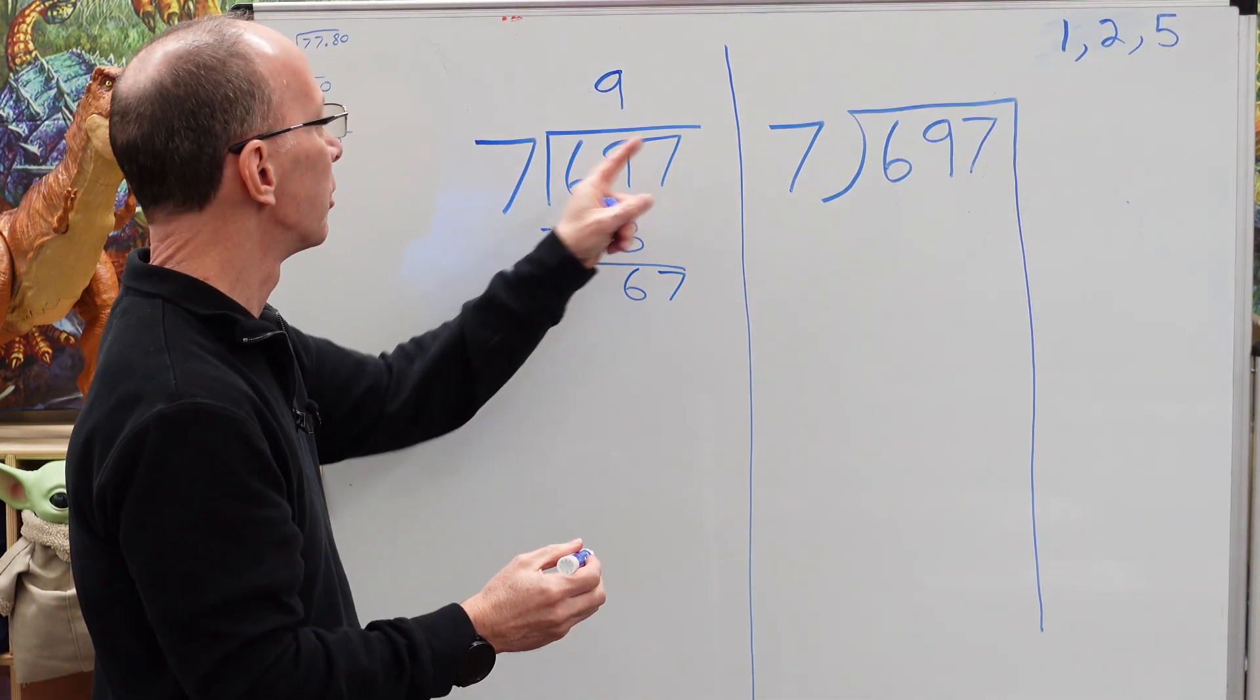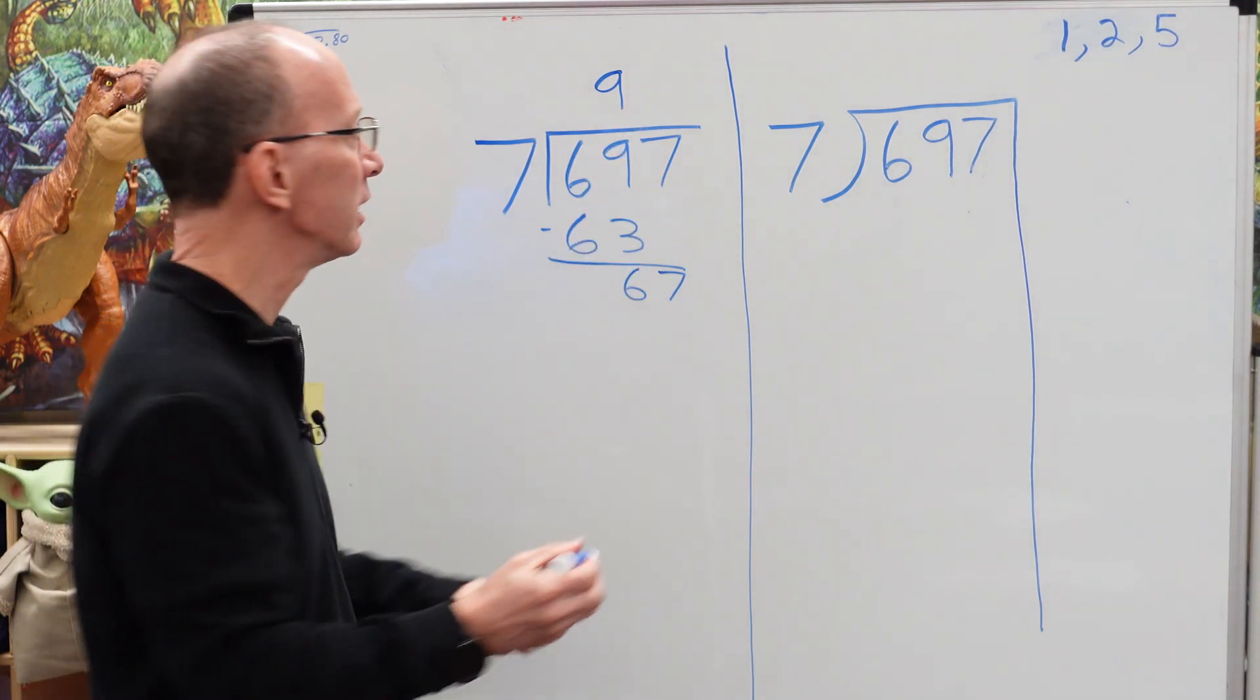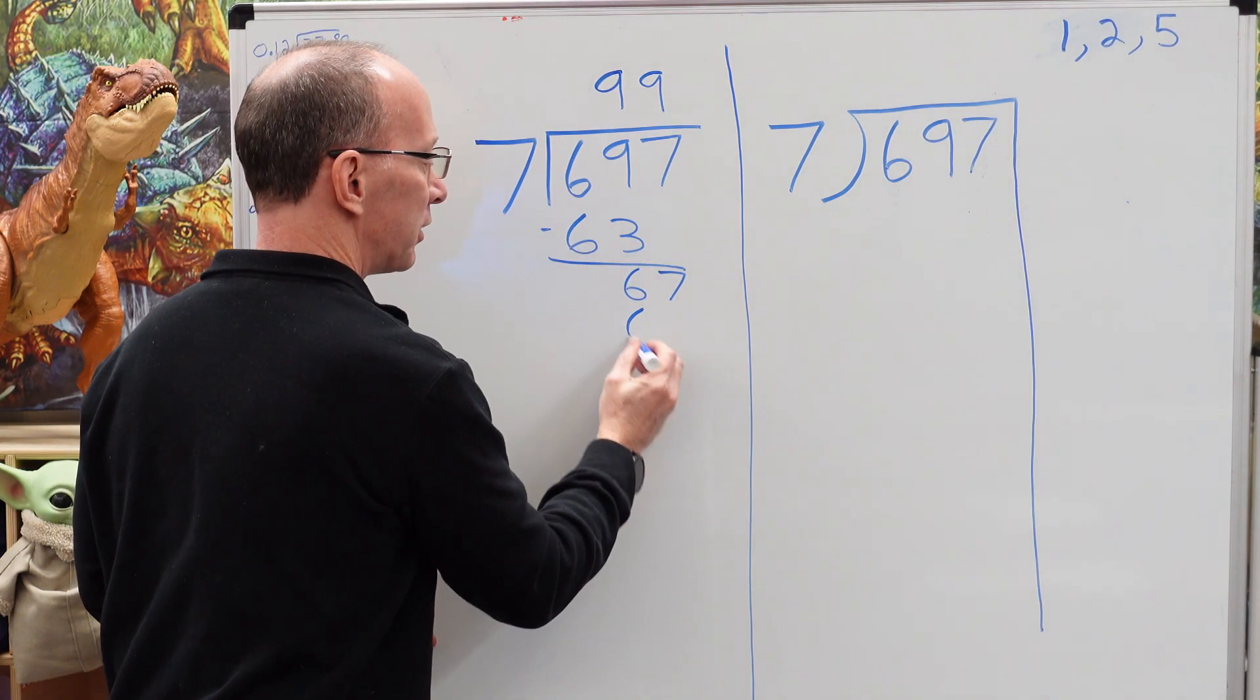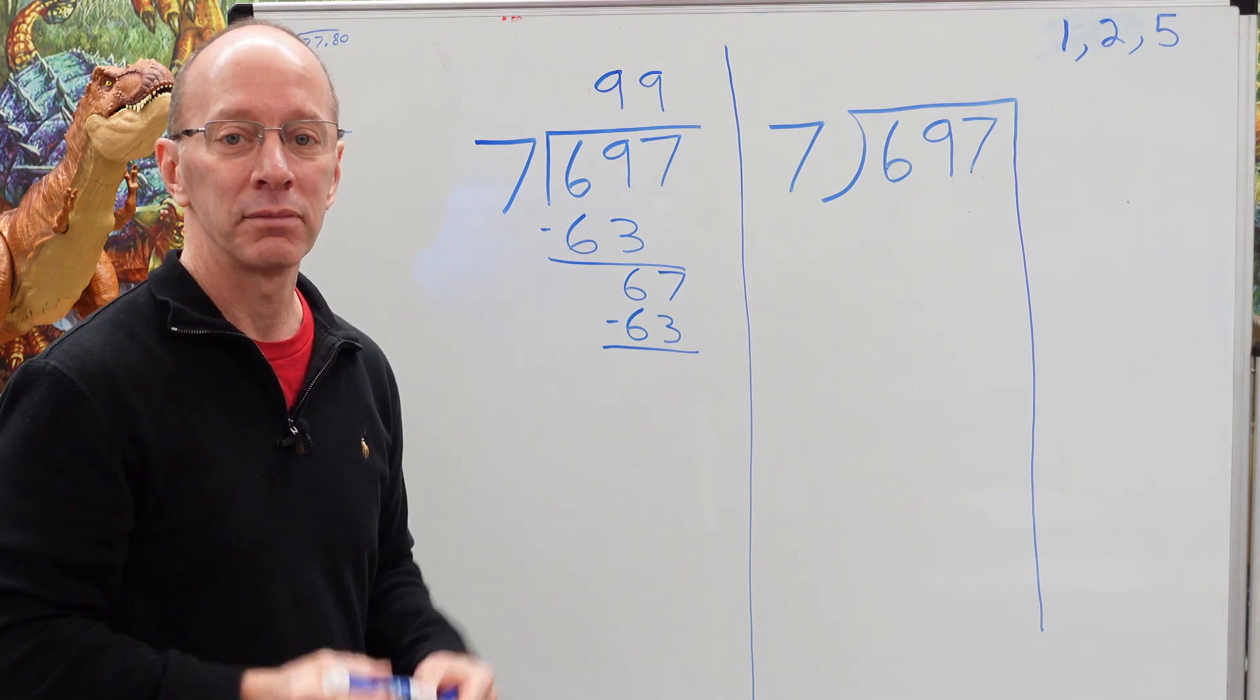So then I go, how many times can I put seven into 67? I think it's good. We're going to use the nine again. So go ahead and put a nine here. Nine times seven is 63. Subtract. Seven minus three, four.